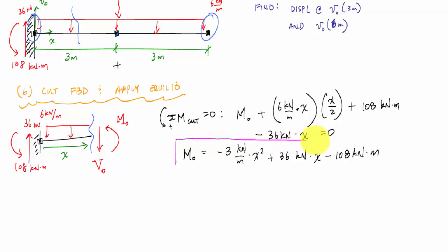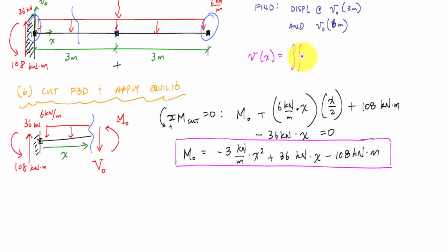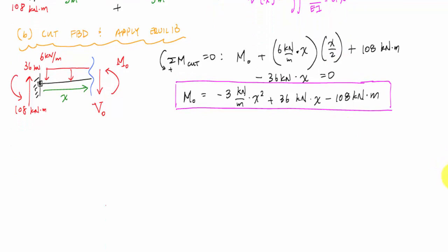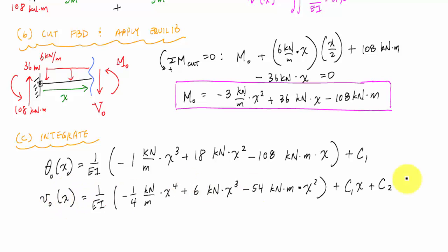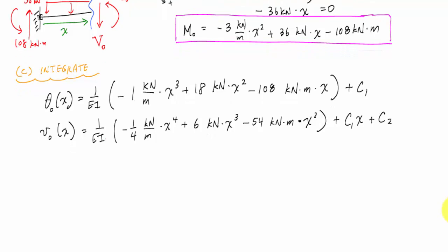That is my moment function. From the double integration method, you integrate twice to get displacement: v(x) is the double integral of M/EI dx. Taking the first antiderivative gives the slope function θ₀(x) equal to one over EI times the integral of the moment function, and one more integration gives the displacement function v(x). I then need to solve for the constants of integration using boundary conditions.